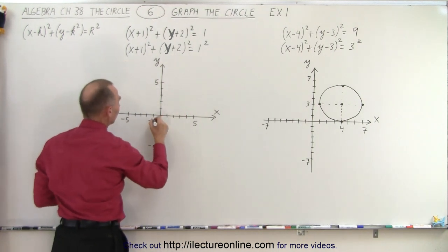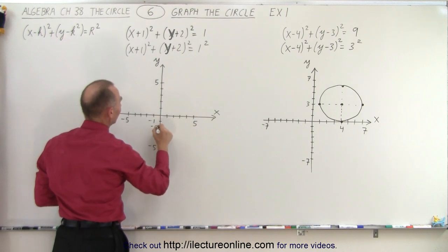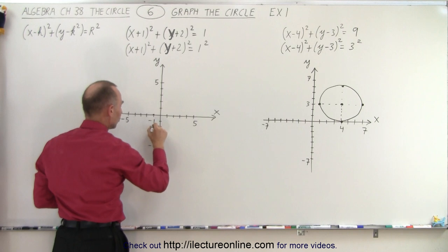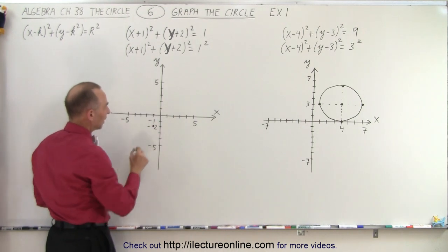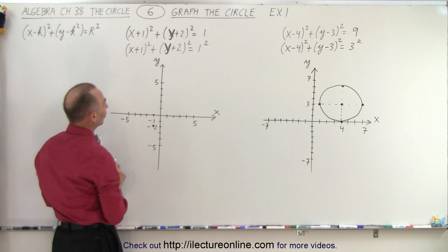So h is at negative 1 and k is at negative 2. So negative 1 is over here, negative 2 is over there. So where the 2 meet, I probably want to put my negative sign over there. That will be the center of the circle.